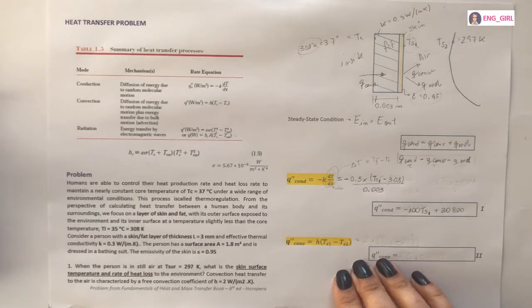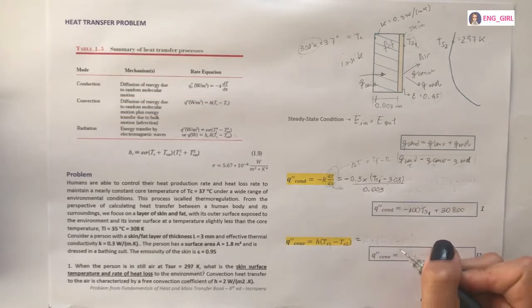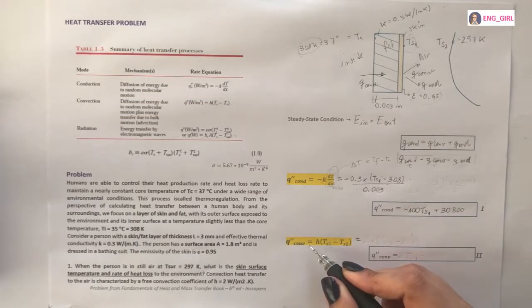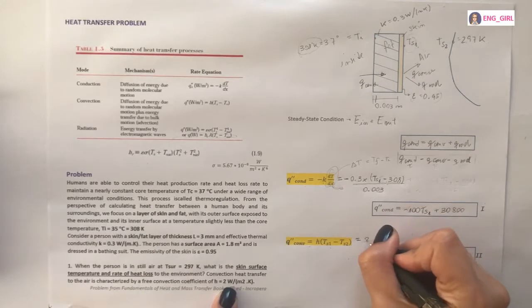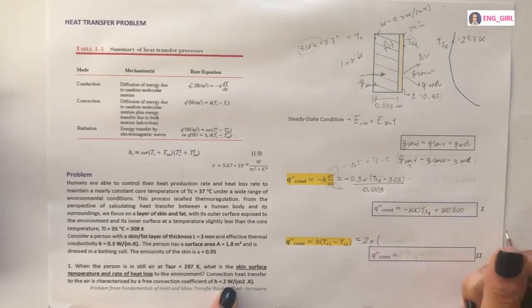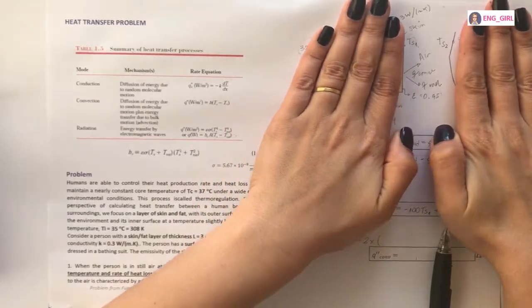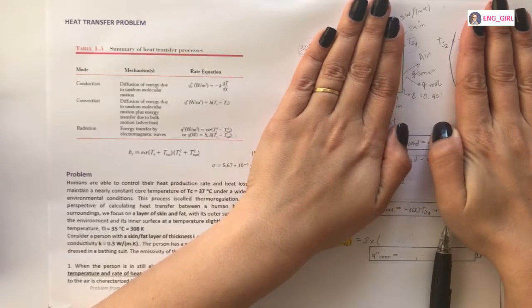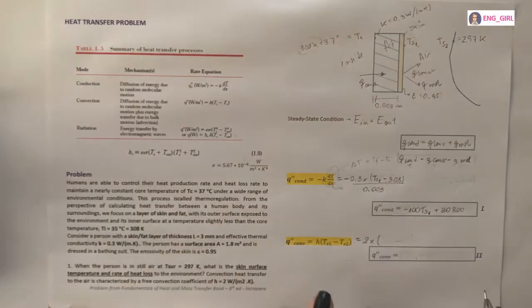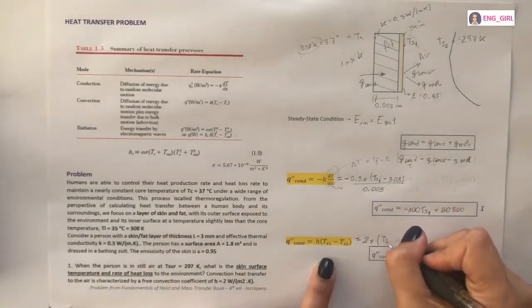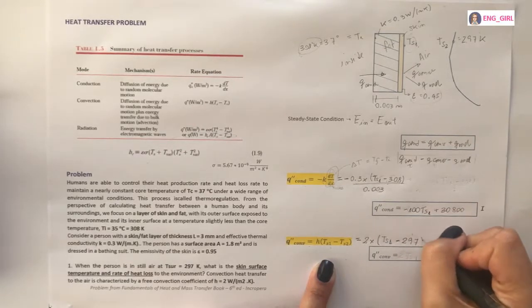Now we have to perform the same to convection. Let's replace the variables. h is the convection coefficient, it's 2 multiplied by convection. We are considering these temperatures. So the temperature will be TS1 and TS2. TS1, we are looking for, less TS2, 297 kelvin.